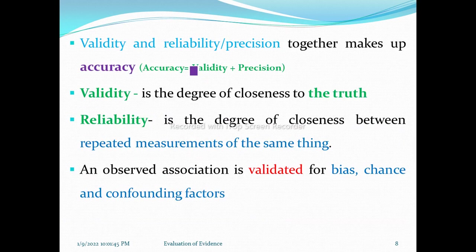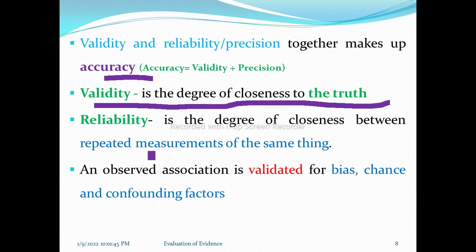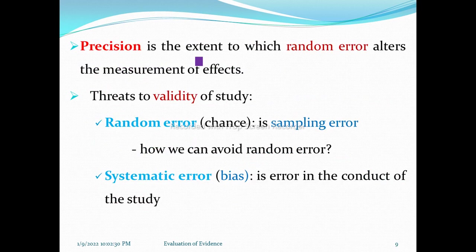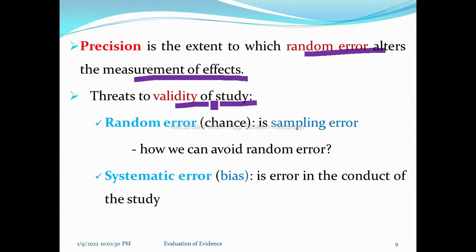Validity and reliability together make up accuracy. Accuracy equals validity plus precision. Validity is the degree of closeness to the truth, whereas precision is the degree of closeness between repeated measurements of the same thing. An observed association is evaluated for bias, chance, and confounding factors. Threats to the validity of the study are random error and systematic error.